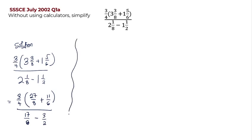So from here we proceed. We have these expressions in brackets, so we need to simplify them first. So we have 3 on 4 into bracket: between 8 and 6 the LCM will be 24. 8 will go into 24 three times, and 3 multiplied by 27 will give me 81. Plus 6 will go into 24 four times, and 4 times 11 will give me 44.